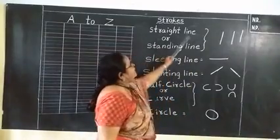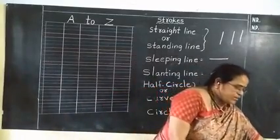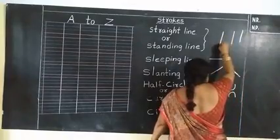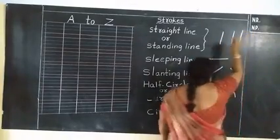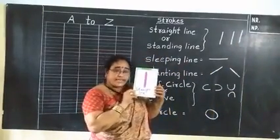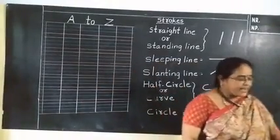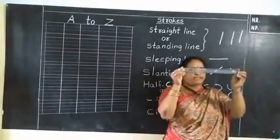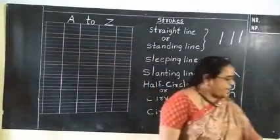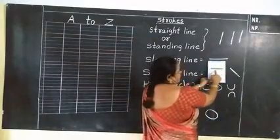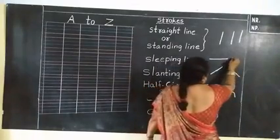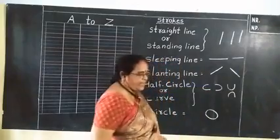Once again, let me tell you about the strokes. See here — this is straight line or standing line. It should be exactly straight. What is this? Straight line or standing line. And the next one is sleeping line — like this.